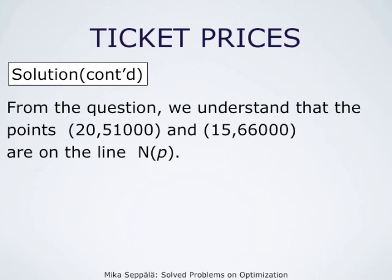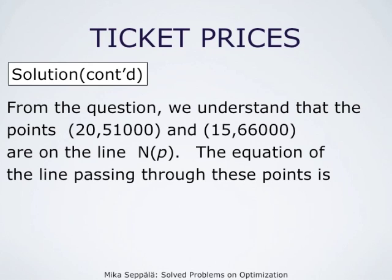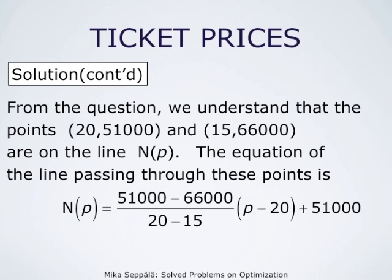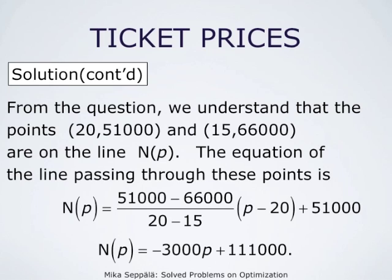The equation of a line passing through these two points can easily be computed by standard formula. So this equation is N(P) = (51,000 − 66,000)/(20 − 15) times (P − 20) + 51,000. This simplifies to N(P) = −3,000P + 111,000.